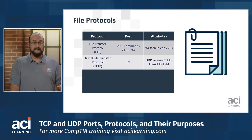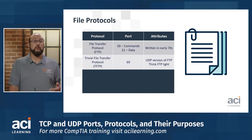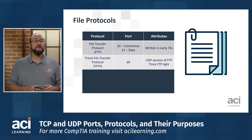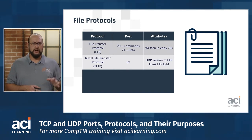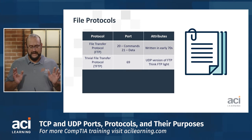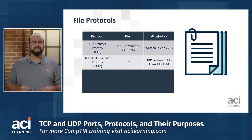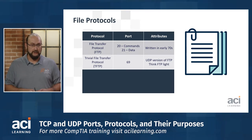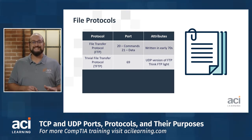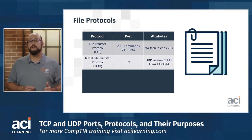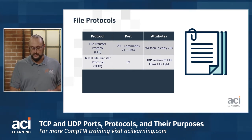Think of the next one as FTP Lite — that's the Trivial File Transfer Protocol, TFTP. It's a stripped-down version of FTP and goes over UDP, the User Datagram Protocol. It's connectionless and we use it a lot to deliver things like configuration files. TFTP goes over port 69. Be aware of what the acronym means, the purpose of the protocol, and its port.